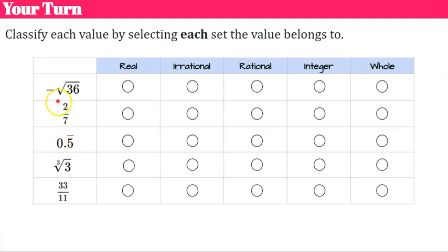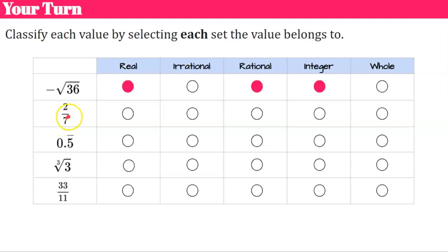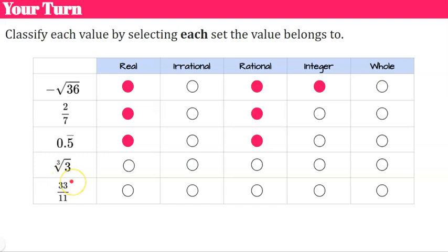Welcome back. The negative square root of 36 simplifies to negative 6, since 36 is a perfect square. Negative 6 is real, rational, and an integer — but not a whole number because it's negative. Two-sevenths is a fraction, so it is real and rational. Zero-point-5 repeating can be written as the fraction 5/9, making it real and rational. The cube root of 3 is a non-perfect cube, so it is real and irrational.